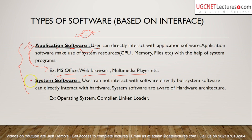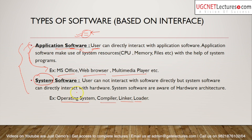System software does not interact with the user, but it has one very important feature: it can directly interact with hardware. This is because system software knows the architecture of the system — the hardware machine and instruction set architecture. It knows what type of instructions are supported by the machine. Examples of system software include operating systems, compilers, linkers, and loaders.